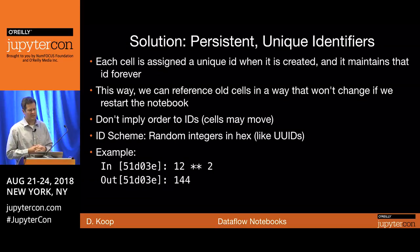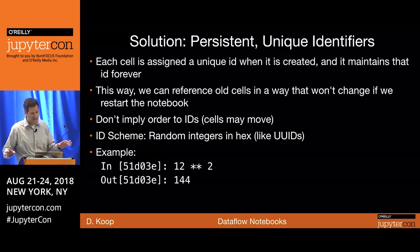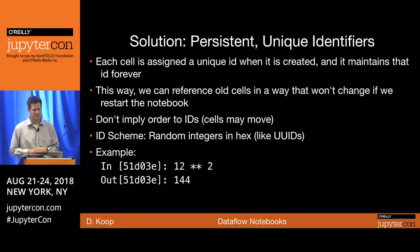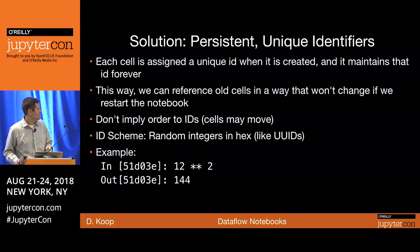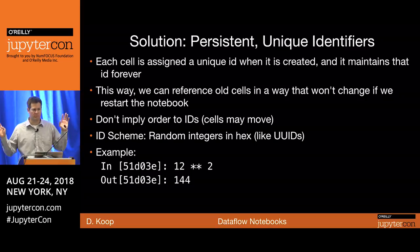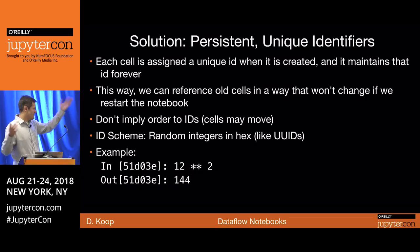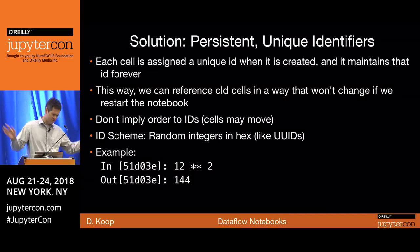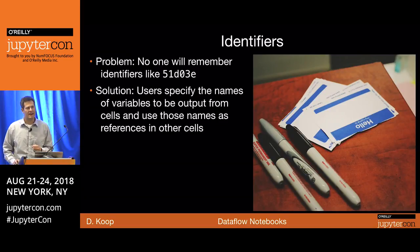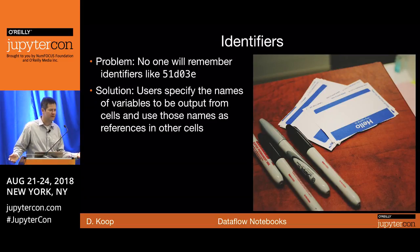One piece of the solution we thought about: why do we keep changing identifiers when things get rerun? Why not have a persistent unique identifier? Assign each cell an ID when it's created, maintain that ID forever — close the notebook, reopen it, still the same ID. We didn't want to imply any order to these IDs, so we used random numbers written in hex to make them look more technical. You get a changed notebook with hexadecimal identifiers on both input and output.